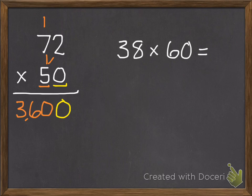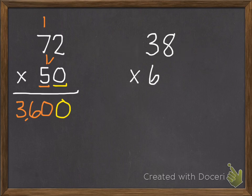If I have it written sideways, I could use the zero trick, but I prefer to have my numbers stacked on top of each other. So I'm going to actually rewrite this. So 38 times 60. It's important if you rewrite it, that you put the number with the zero on the bottom. So this works out a little bit easier.